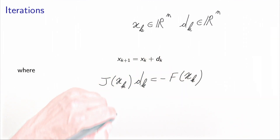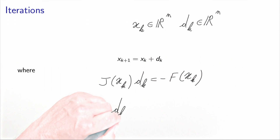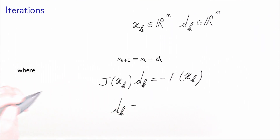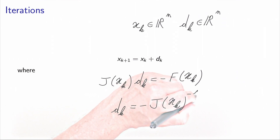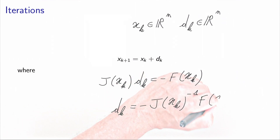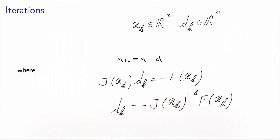If the Jacobian is invertible — which we assume it is — we have dk equal to the Jacobian inverse times the value of the function. This has a very similar format to the one-dimensional case: it is minus the value of the function divided by the derivative, now written using matrices and vectors.